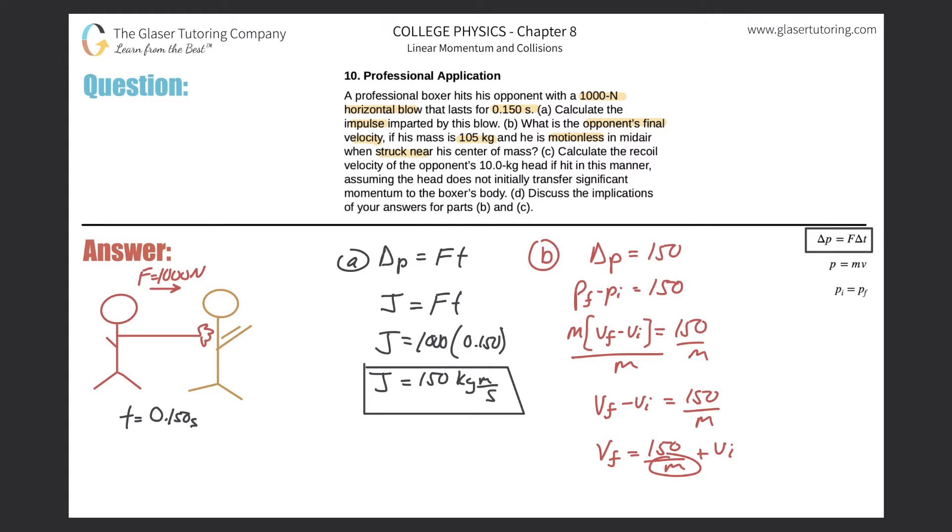Do we know the mass of the opponent? Yes, he's 105 kilograms. Do we know his initial velocity? Yes, he is motionless, so the initial is zero. The final velocity therefore will be 150 over 105 plus zero, but obviously that doesn't do anything. So the final velocity is 1.43 meters per second.